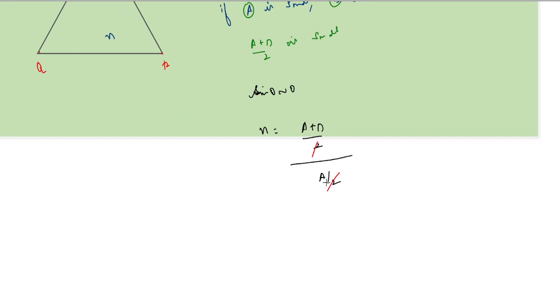If you take A from here to this side, it becomes n into A. So n into A is equal to A plus D.